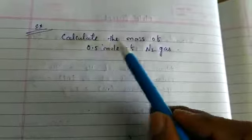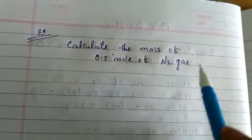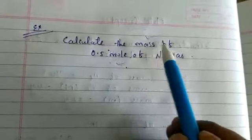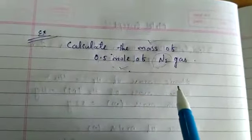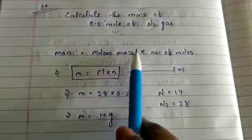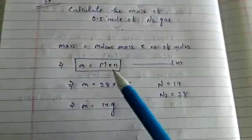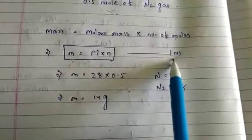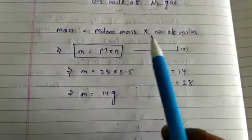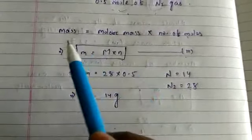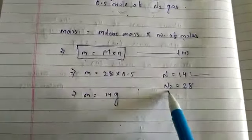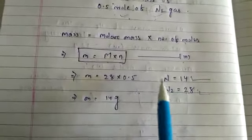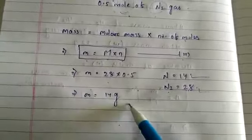Next example: calculate the mass of 0.5 mole of nitrogen gas. Here we have to find the mass when moles are given. The formula is: mass = molar mass × number of moles (m = M × n). For nitrogen gas N₂, atomic mass of N is 14, so for N₂ it is 28u, and molar mass is 28 grams. So mass = 28 × 0.5 = 14 grams.